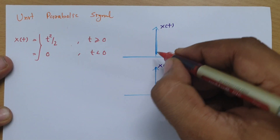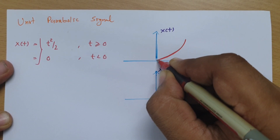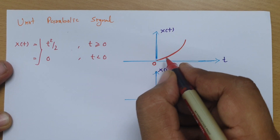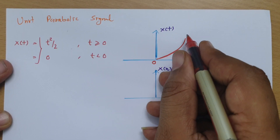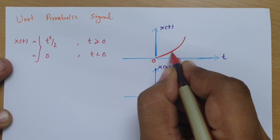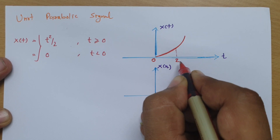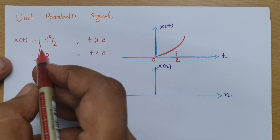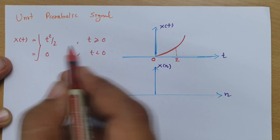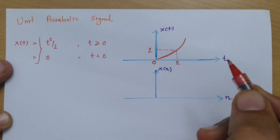If you plot this, you will find it has a parabolic shape. At 0, it is 0, and the parabolic shape follows from there. For example, if the time value is 2, placing it into t squared by 2 gives 4 divided by 2, which equals 2. So at t equals 2, the magnitude will be 2.